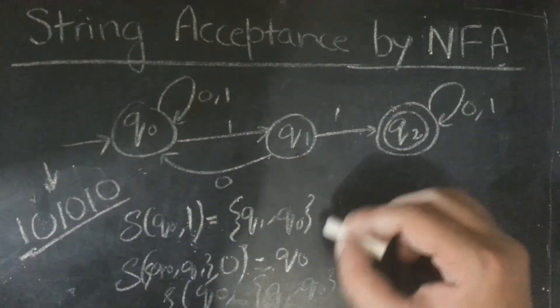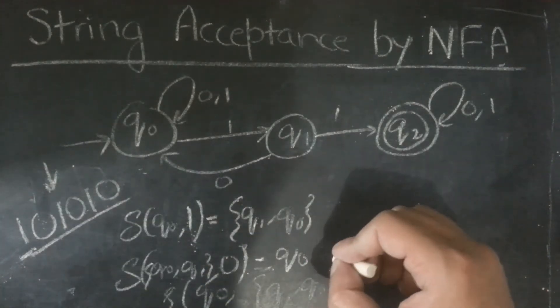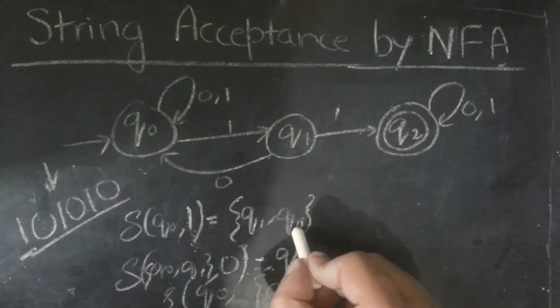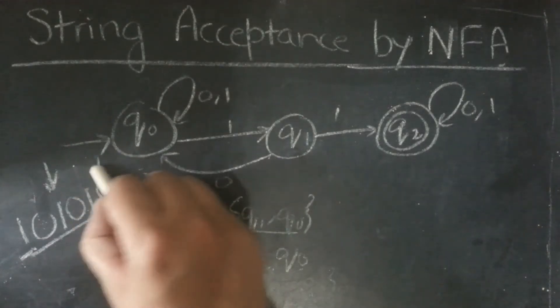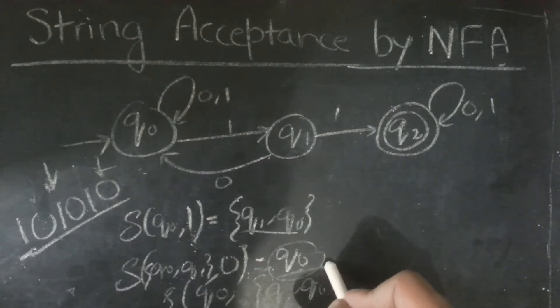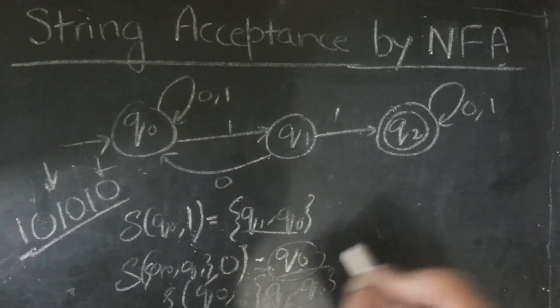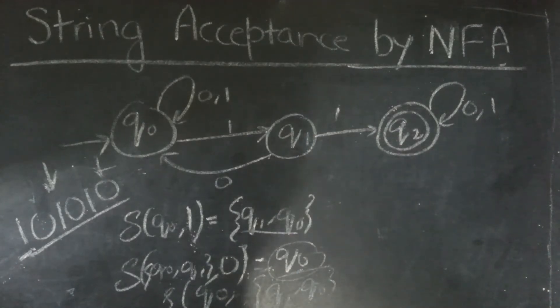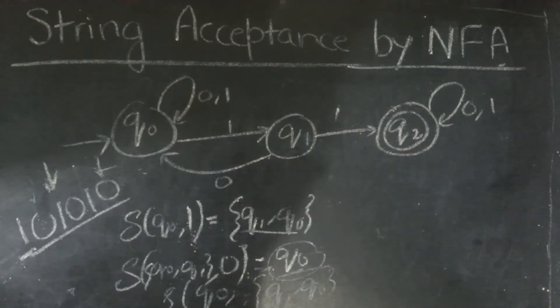Now, again 0. So, we will keep on switching between these two conditions. And since q2 is, it will end on 0. So, this will be the last part. Last answer will be q0. And since to be accepted, the answer must contain q2. Since it does not, so the string is not accepted.